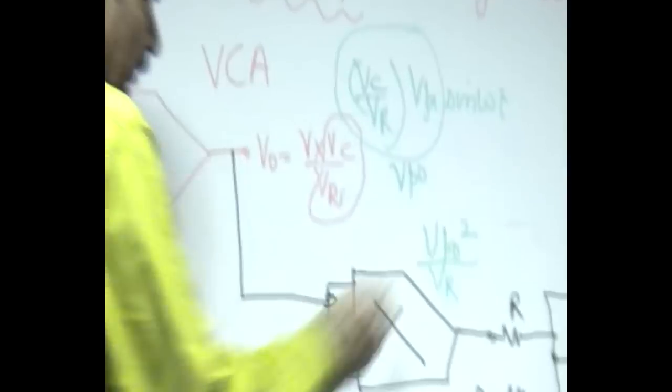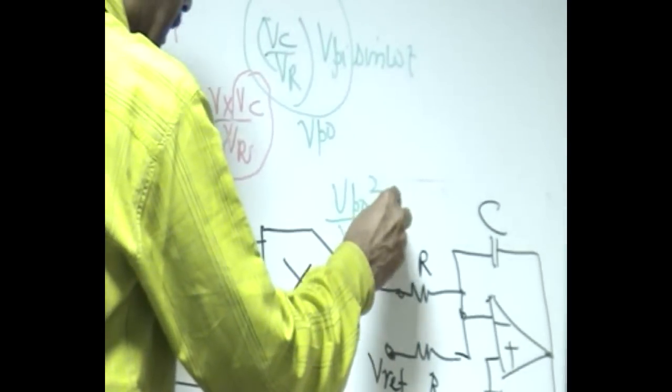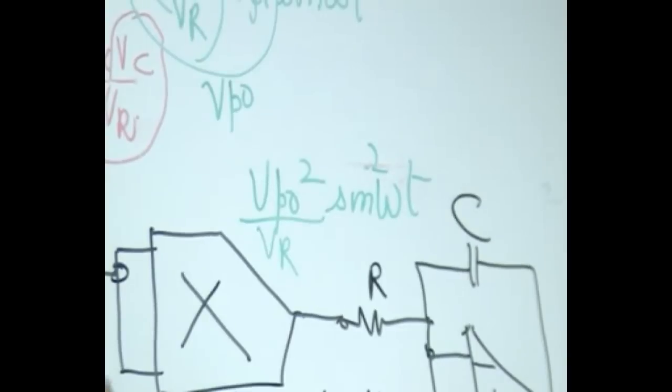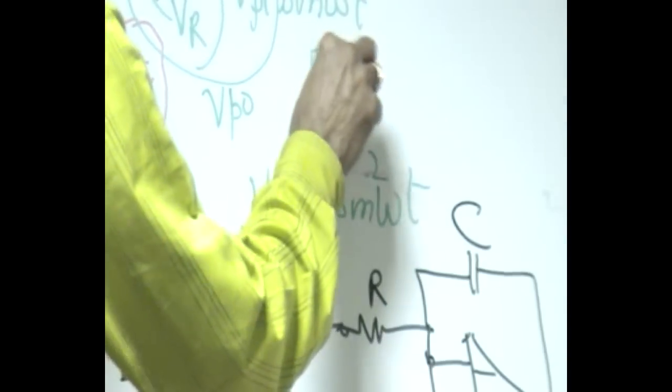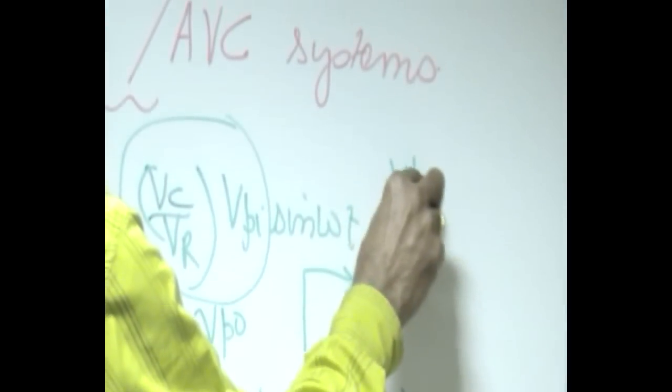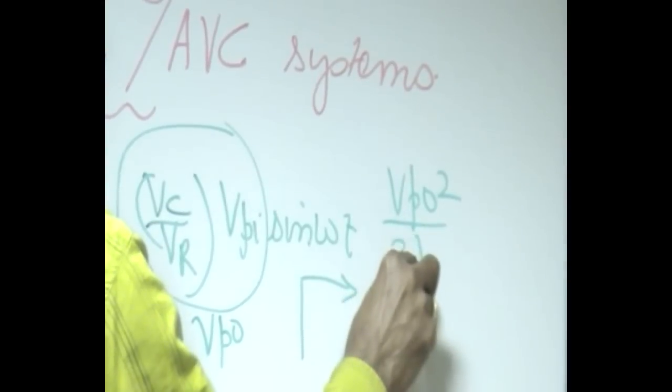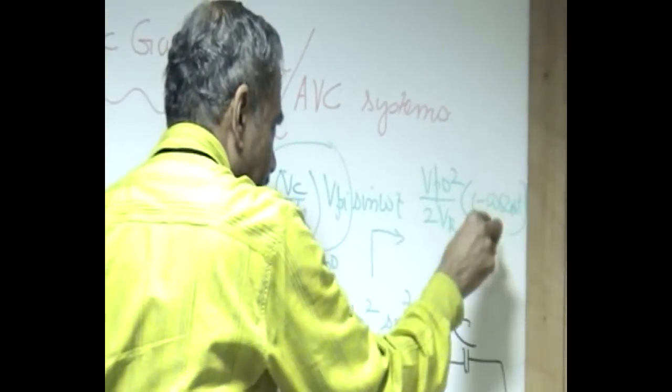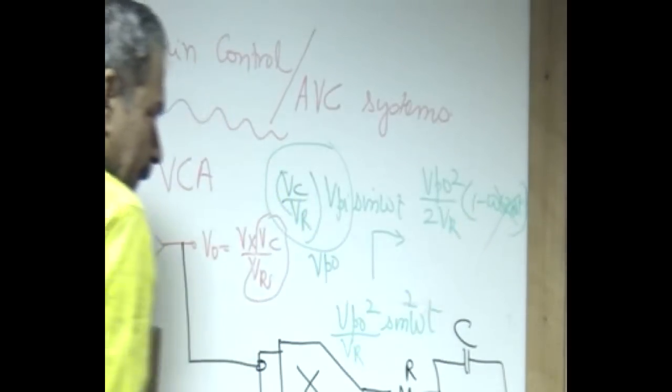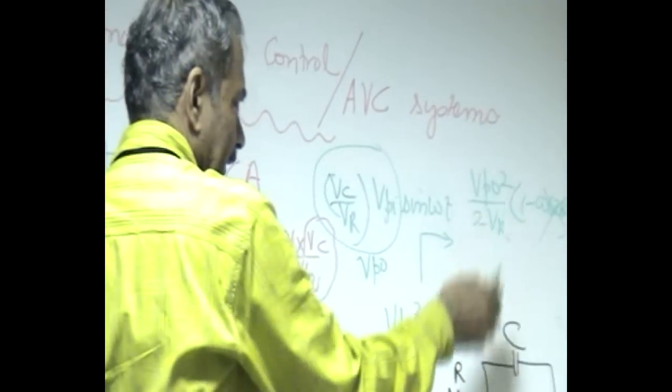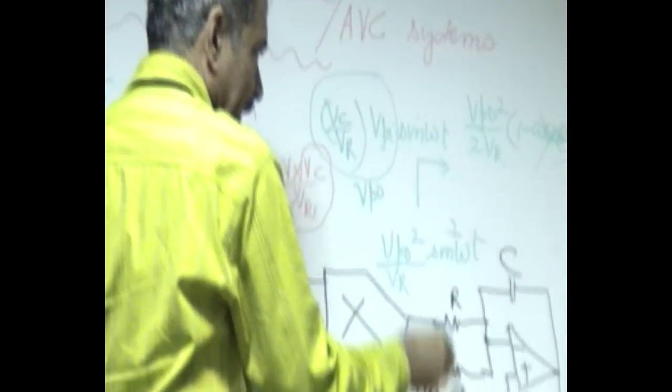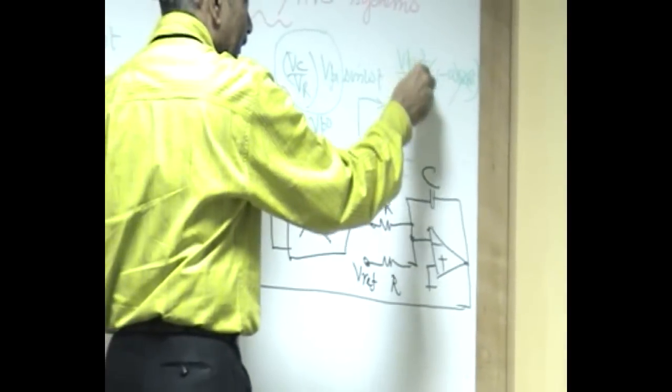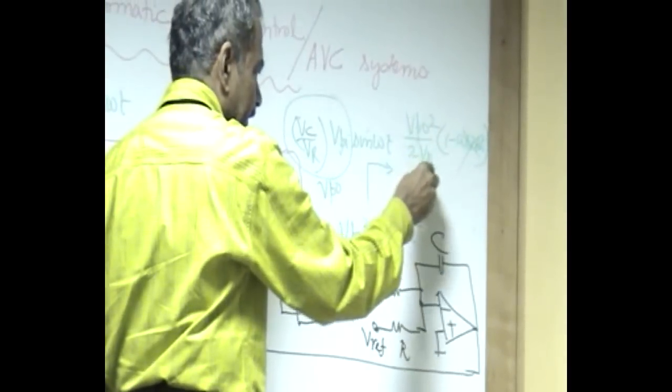It becomes V_po squared divided by V_r into sin(ωt), sin squared(ωt), which has a DC component: V_po squared divided by 2V_r times (1 minus cos(2ωt)). This gets filtered by the low-pass filter action here, and it responds to only the DC component, V_po squared divided by 2V_r.